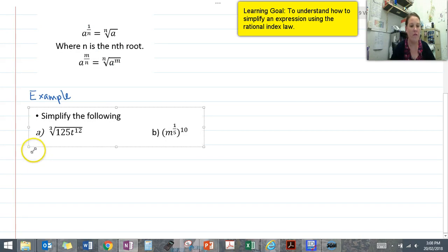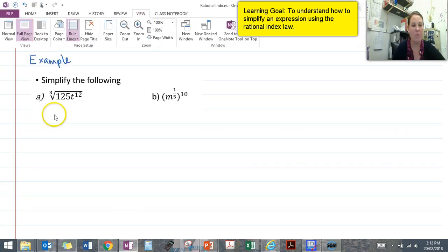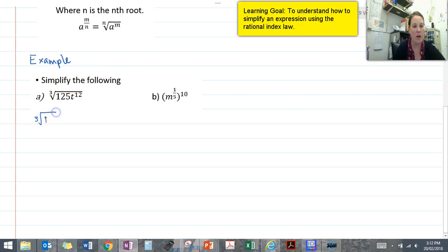So for this first example, we have the cube root of 125t to the 12. Now that can also be written as the cubic root of 125 times the cubic root of t to the power of 12.